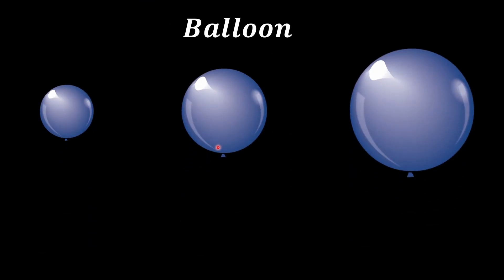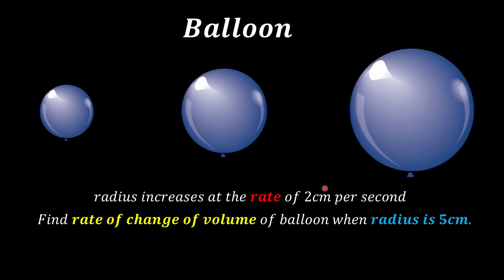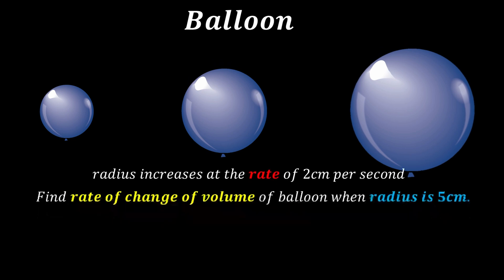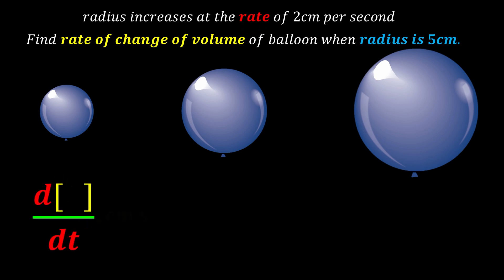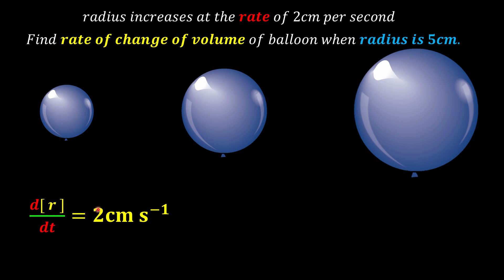For a balloon being pumped up: the radius increases at the rate of 2 cm per second. When you see 'rate,' always think d over dt. Since the radius increases, dr over dt equals positive 2 cm per second. We need to find the rate of change of volume, so that's dV over dt. Using the chain rule: dV over dt equals dV over dr times dr over dt.